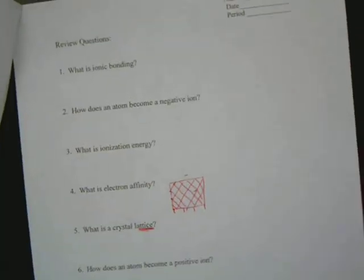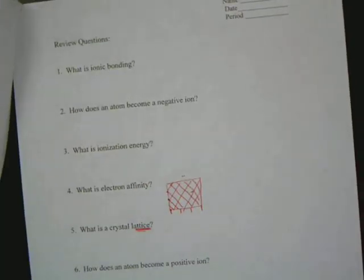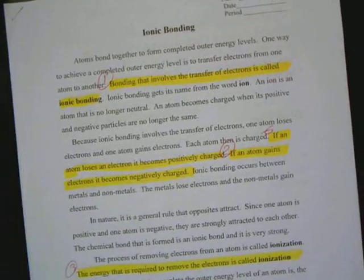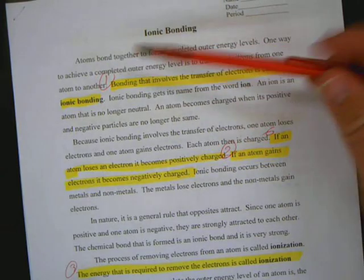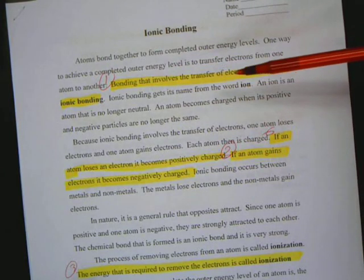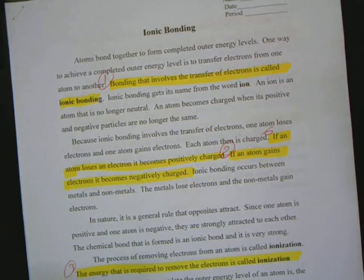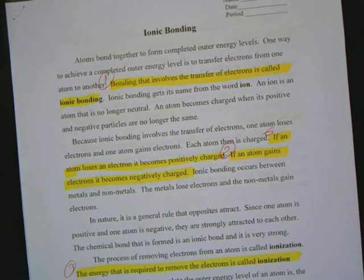First question, what is ionic bonding? If you go up here, the third sentence says bonding that involves the transfer of electrons is called ionic bonding. Transfer of electrons needs to be in your answer.